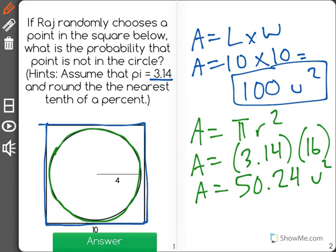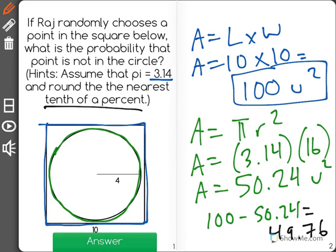So the question is, what is the probability the point is not in the circle? What I need to do is find the difference between 100 and 50.24, which is equal to 49.76. And it says to round to the nearest tenth of a percent.